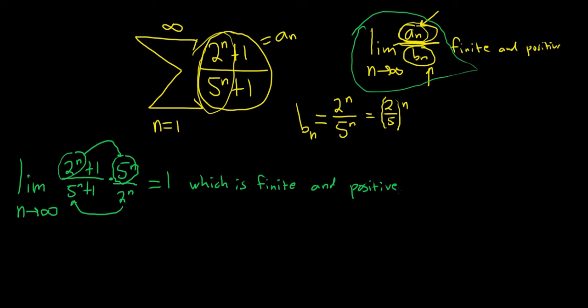So this means we can use the limit comparison test. LCT applies. So what does that mean? It means that if we add up all of these and the answer is a convergent series, then this one converges also by limit comparison. If these diverge, then our original series will also diverge. So let's look at that series.